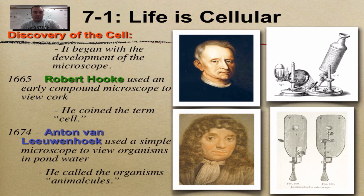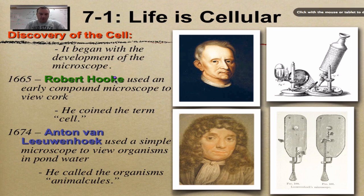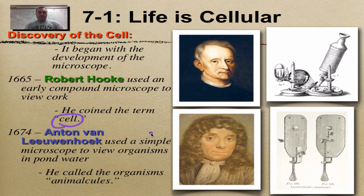What we're going to start with here is how did we discover the cell in the first place? It began during the Enlightenment with a gentleman named Robert Hooke. Robert Hooke is from England — it's very English to put an E at the end of the name. He was the guy that came up with the word "cell." What he was doing is he was looking at cork cells.